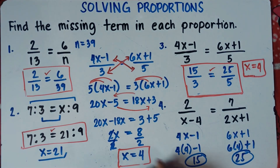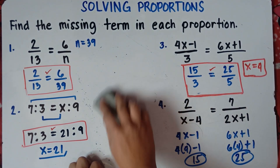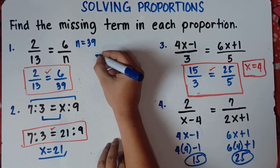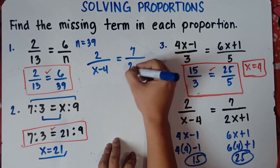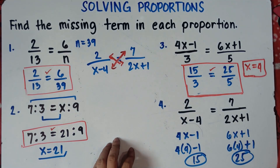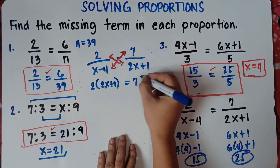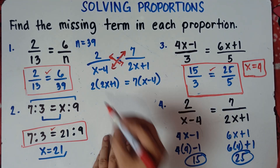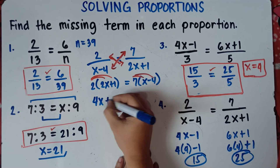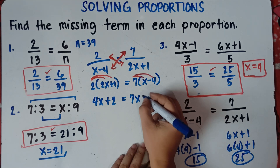Let's try number 4. We have 2 over (x minus 4) equals 7 over (2x plus 1). Once again, we do cross multiplication. So: 2 times (2x plus 1) equals 7 times (x minus 4). Distribute: 2 times 2x is 4x; 2 times 1 is positive 2. Equals: 7 times x is 7x; 7 times negative 4 is negative 28.